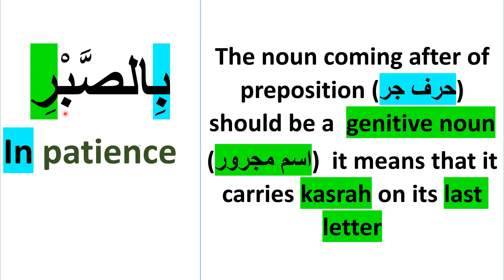بِصَبْرِ means 'with patience.' The noun coming after the harf jar, or preposition, should be a genitive noun — isma jroor — meaning it carries a kasra on its last letter.